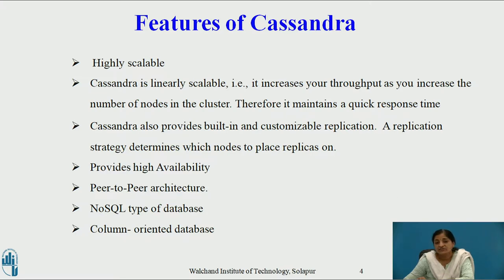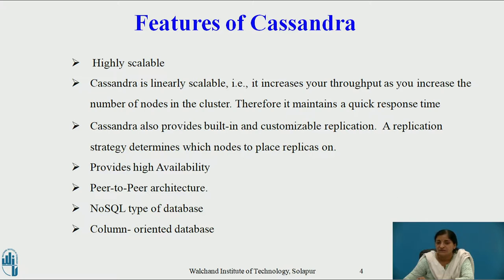Cassandra has a very good feature — it provides high availability. Since Cassandra uses replication strategy and all the nodes in Cassandra are independent of each other, they are independently able to handle the read requests and write requests of the user. So even if one node fails in Cassandra, the work does not stop. This is a desirable feature for critical applications which cannot afford to have failures. So there is no single point of failure in Cassandra, and it provides high availability.